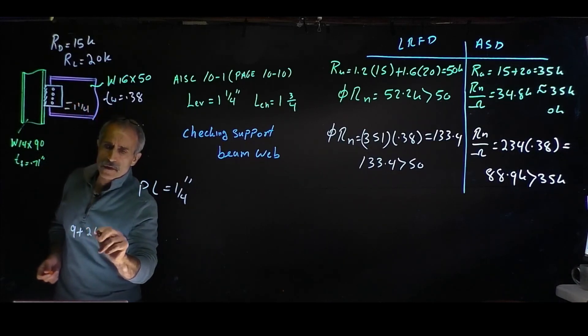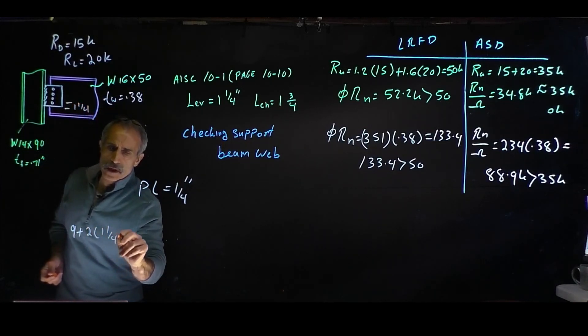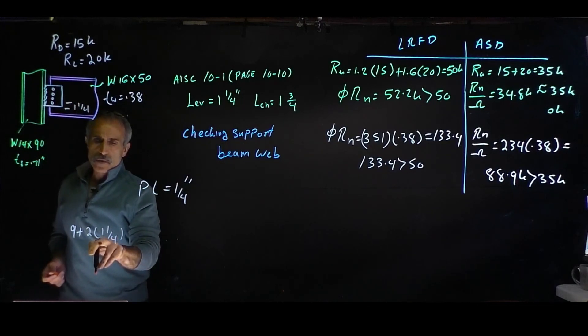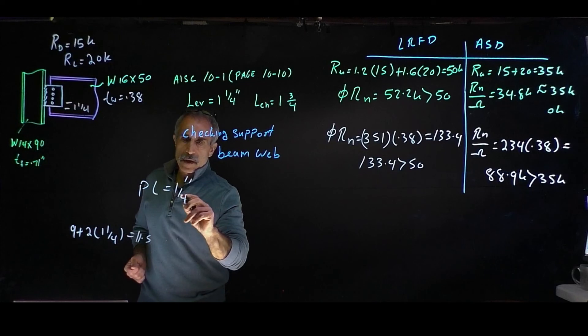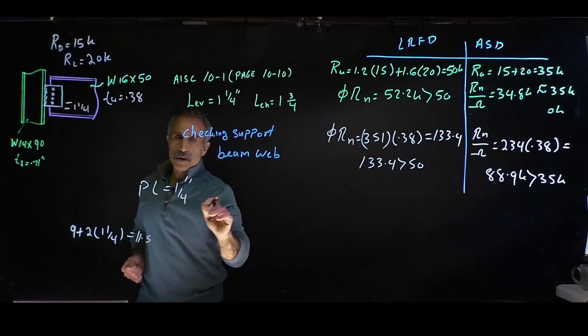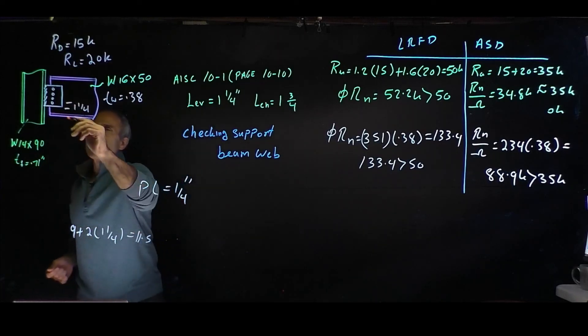1-1/4, so plus two times 1-1/4, so that makes it 2-1/2. That makes it 11-1/2, so 11.5.